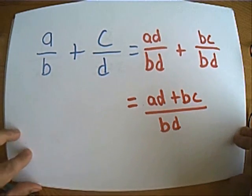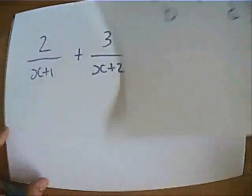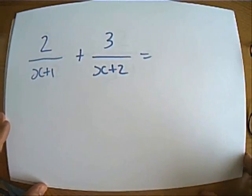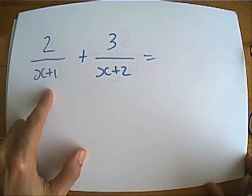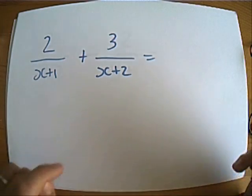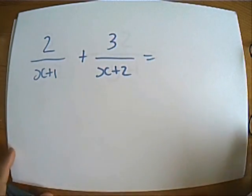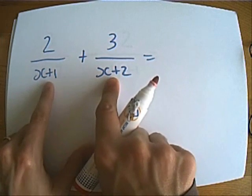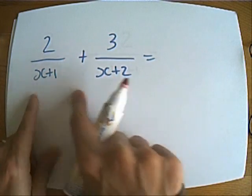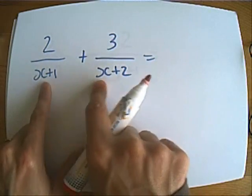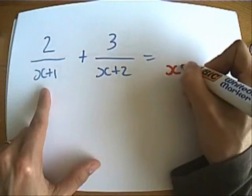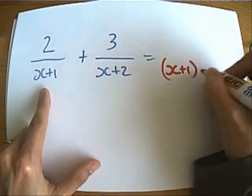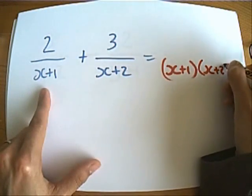So what does it actually look like in practice? Here's the first example. Imagine you've got 2 over x plus 1 added to 3 over x plus 2. How are we going to go about doing this? Well, first of all, we're going to multiply the two denominators together to get our common denominator. And in this case, I'm not going to bother expanding the brackets out when I've done this. I'm just going to leave it as x plus 1 in brackets times x plus 2.